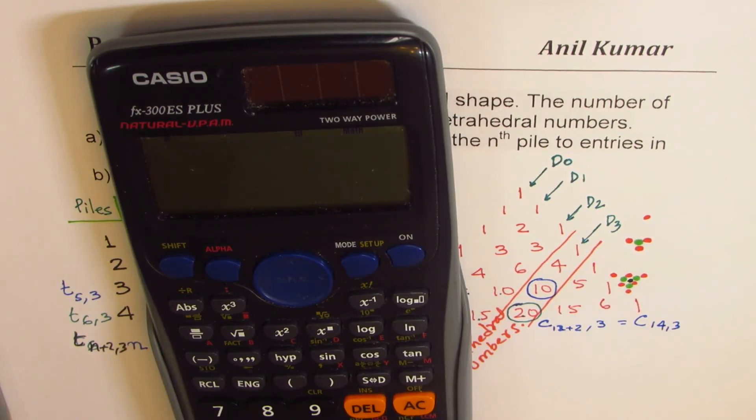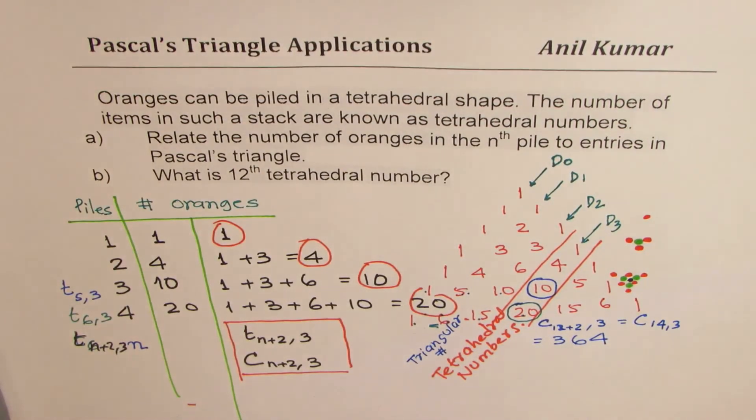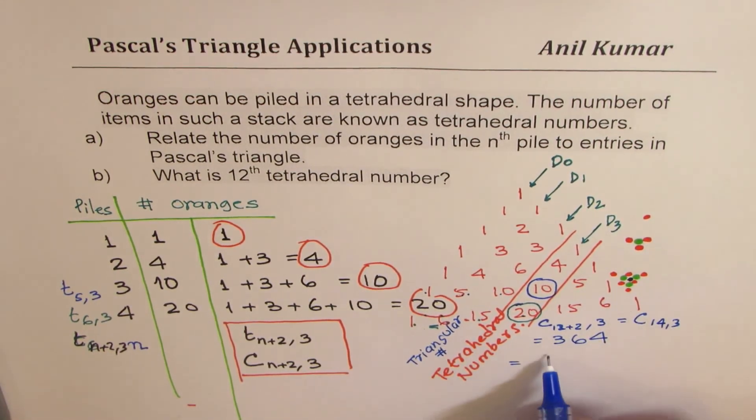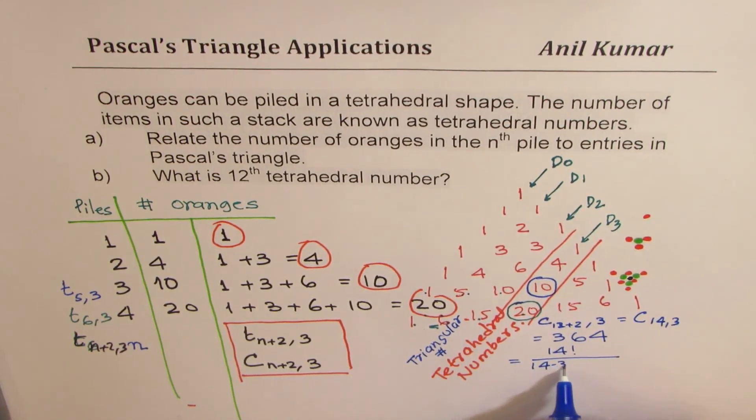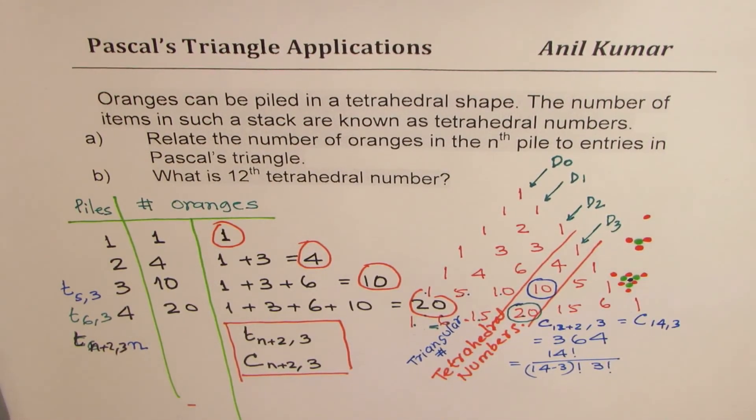You can use your calculator to calculate this answer. So we have on the calculator, 14 C three normally will place. So 14 shift and the function is NCR, which is written here, and then three equals two. The answer is 364. Perfect. Or you could use the formula 14 C three means 14 factorial divided by 14 minus three factorial times three factorial. So that will also give you the same result. So I like you to calculate using the formula and verify.